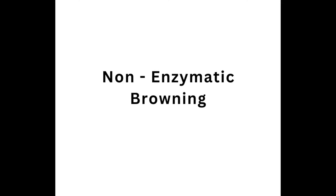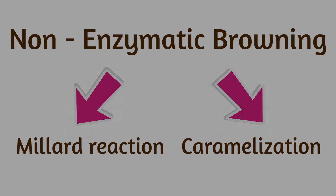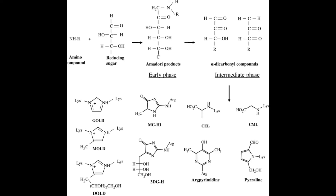When controlling enzymatic browning, inhibition methods can be categorized into three groups considering target compounds such as enzyme, substrate, and products. Non-enzymatic browning splits into two categories: the Maillard reaction and caramelization. The Maillard reaction is an organic chemical reaction in which reducing sugars react with amino acids to form a complex mixture of compounds.